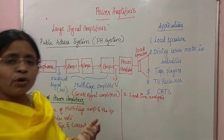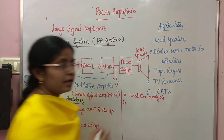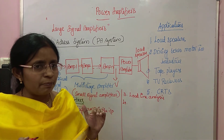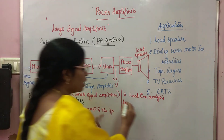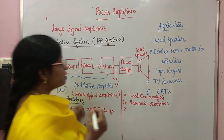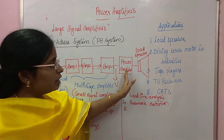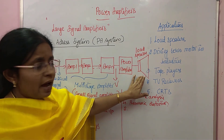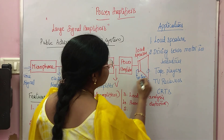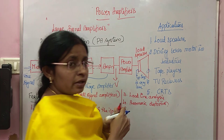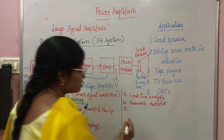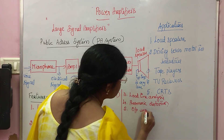The fourth feature: in normal amplifiers there are many types of distortions, but in the power amplifier the distortion is specifically called harmonic distortion. The fifth feature: the power amplifier feeds the loudspeaker, and the loudspeaker's input impedance is very low. So to get impedance matching, the power amplifier's output impedance must also be small — low output impedance is another important feature.